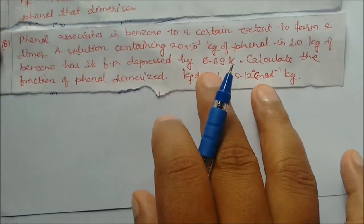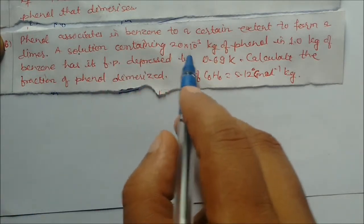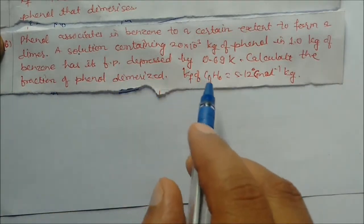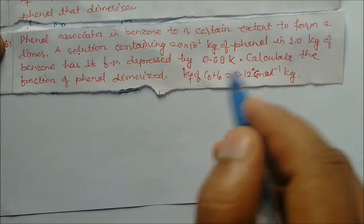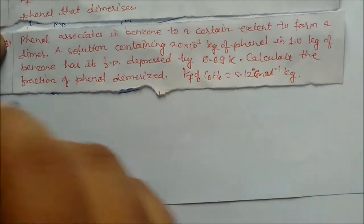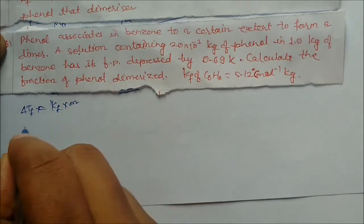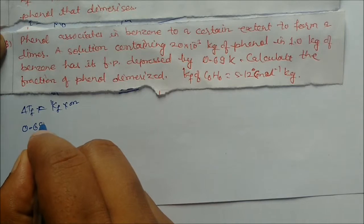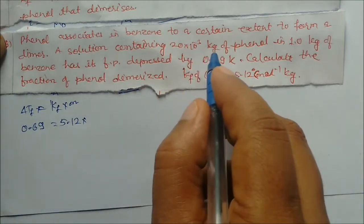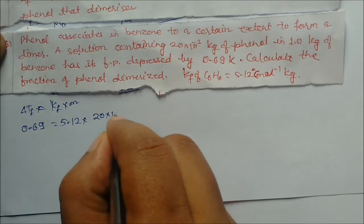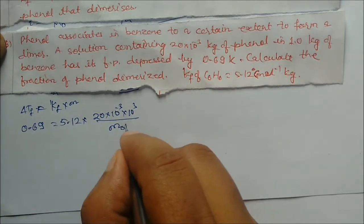Next problem: phenol associates in benzene to form a dimer. A solution containing 20 × 10⁻³ kg of phenol in 1 kg of benzene has its freezing point depressed by 0.69 K. Calculate the fraction of phenol that dimerizes. Kf for benzene is 5.12. Here, since the solvent is known, we find M_observed first: delta Tf = Kf × m = 5.12 × (20 × 10⁻³ / M_observed) / 1.